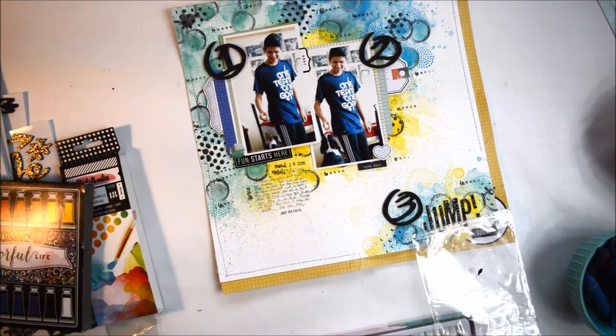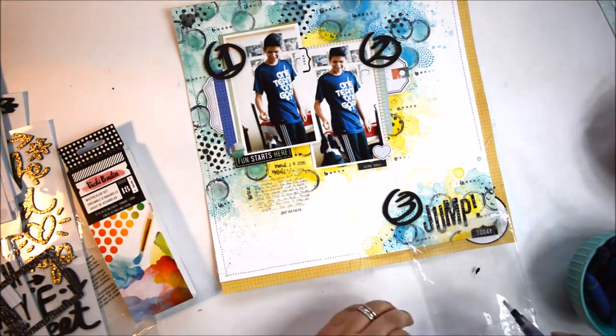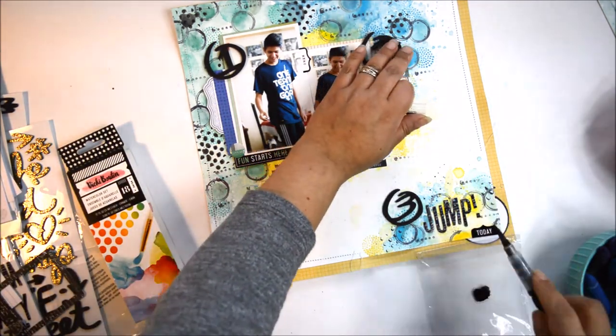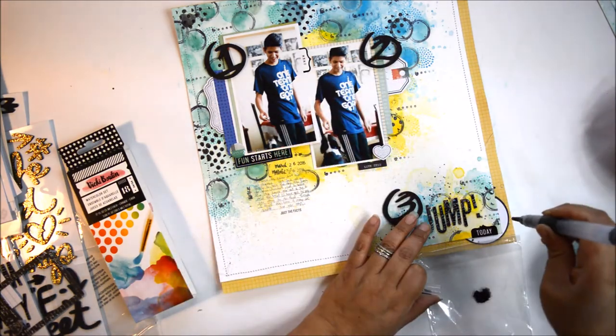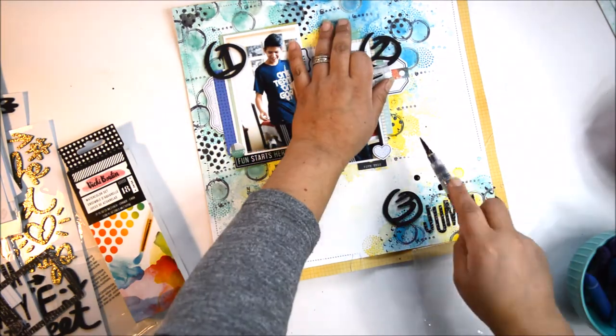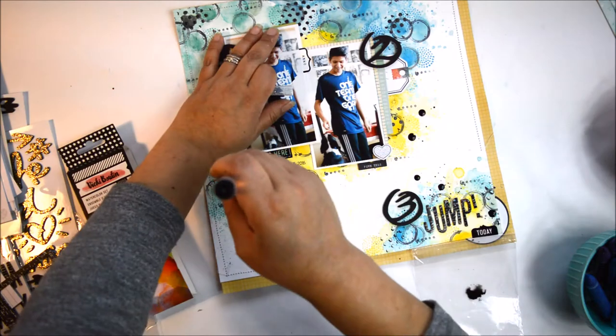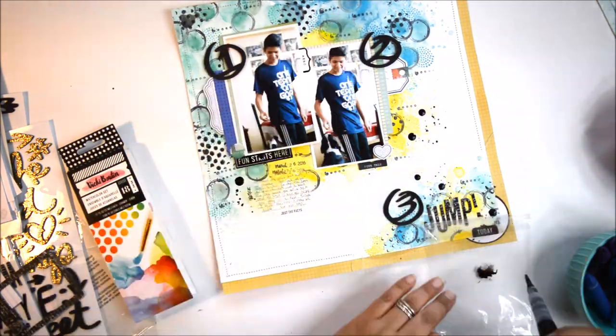After that, I used the watercolor, the black watercolor again. I watered it down just to add some splatters. Think of it as the black ink we add at the end to this page. I wanted to continue that messy look. And I love it. This is it. I love this page.